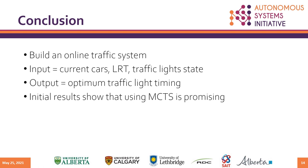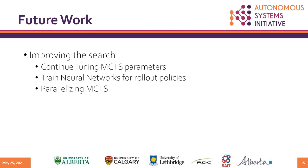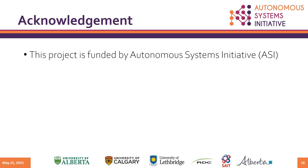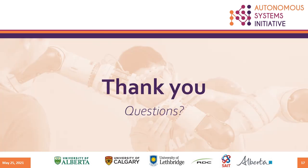All in all, we are trying to create an online traffic control system where we can give it a road network with LRT and car positions and it will return an optimal traffic signal timing. The initial results of MCTS are very promising, but it requires tuning. Our future work is to fine-tune MCTS along with parallelizing it and also create a neural network that will produce rollout policy values. I would like to thank the Autonomous System Initiative for funding this research. Thank you for listening and feel free to ask any questions.